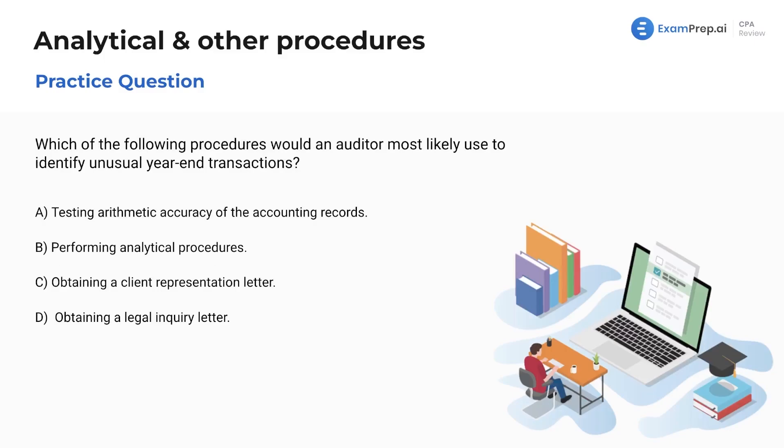Next question up here. Which of the following procedures would an auditor most likely use to identify unusual year-end transactions? I don't know. You tell me. You are the expert candidate here. But you can't because I'm recording this. So unfortunately, I will have to answer it for you. All right. So let's see. Which of the following would they most likely use to identify unusual year-end transactions? Testing arithmetic accuracy of the accounting records. This is a substantive procedure. And because it's a substantive procedure, this is generally going to just test like specific account balances. This isn't particularly going to identify unusual year-end transactions. So I don't really like that at all.